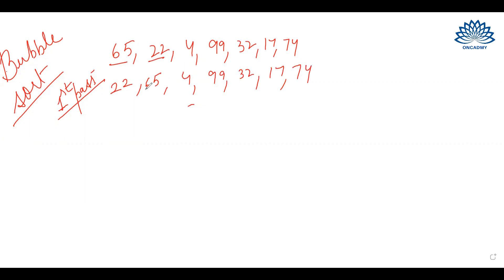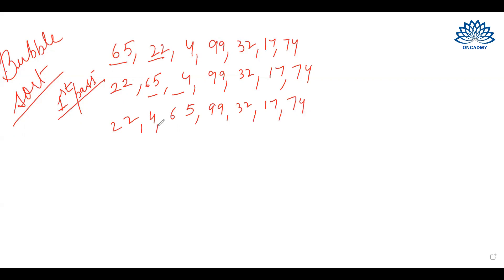Now in the next iteration, we will compare the next two elements. We will compare 65 with 4. We will not swap them. After this iteration, the elements will remain the same.